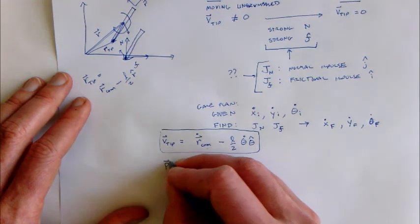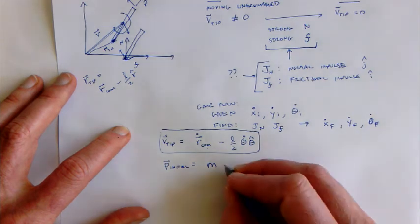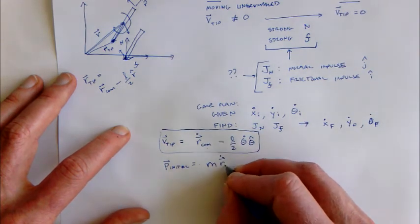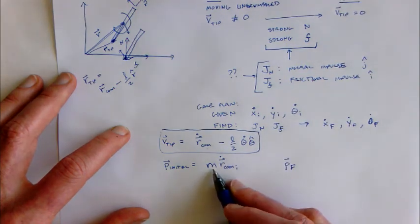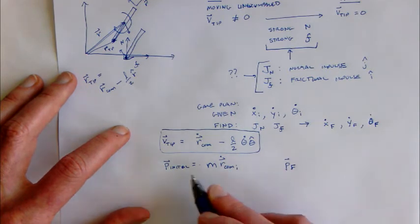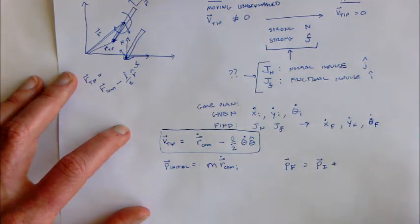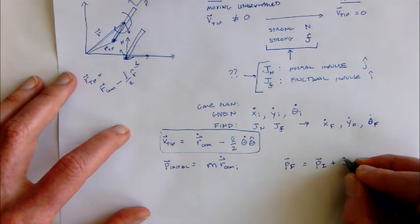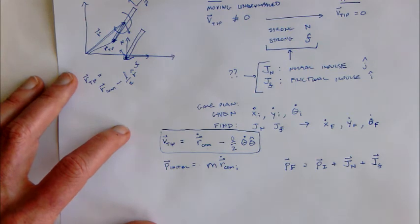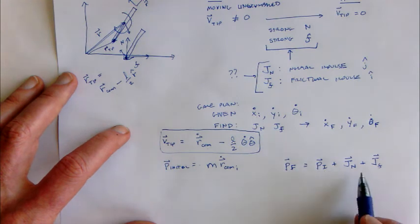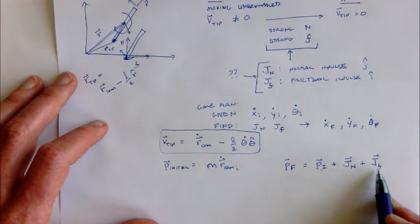My initial momentum is the mass of the caber times the initial velocity of the center of mass. My final momentum is the mass times the final velocity, which also equals the initial momentum plus whatever impulses are applied, since impulses give a change in momentum. So this will be plus the normal impulse plus the frictional impulse. We can write this in terms of initial state variables x-dot and y-dot, and from that we'll know J_n and J_f.